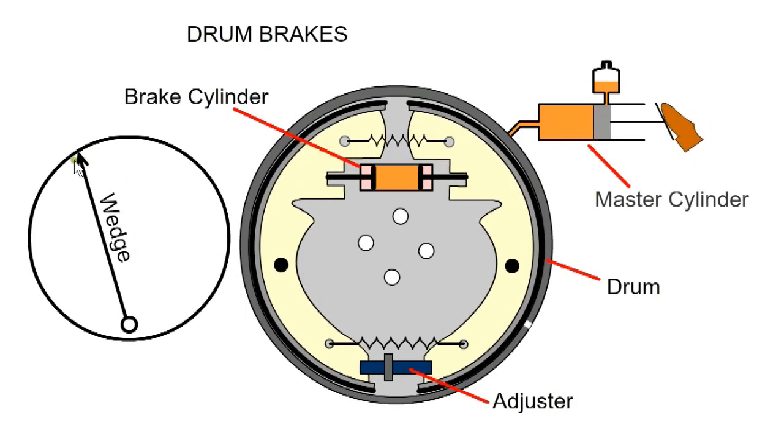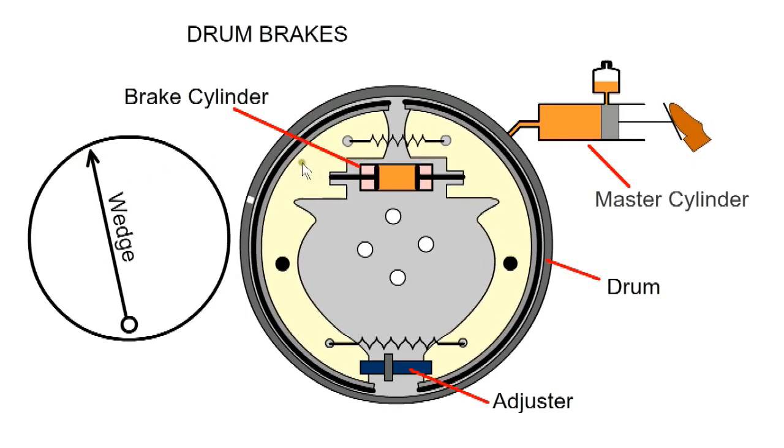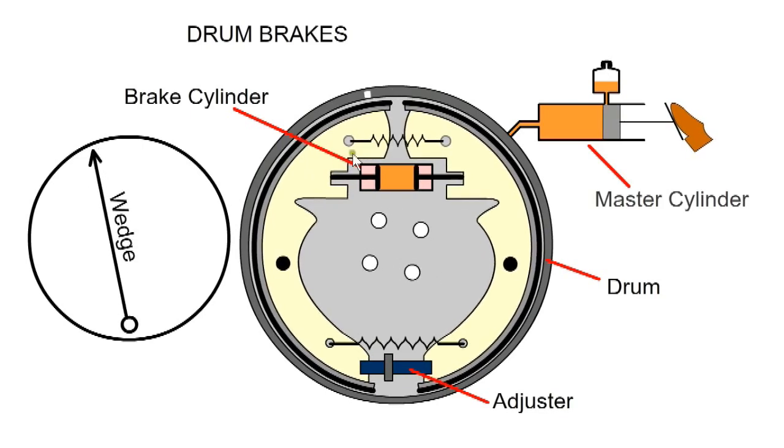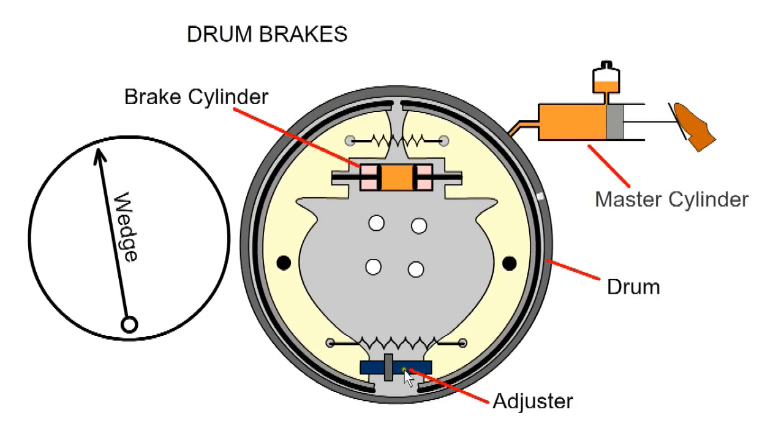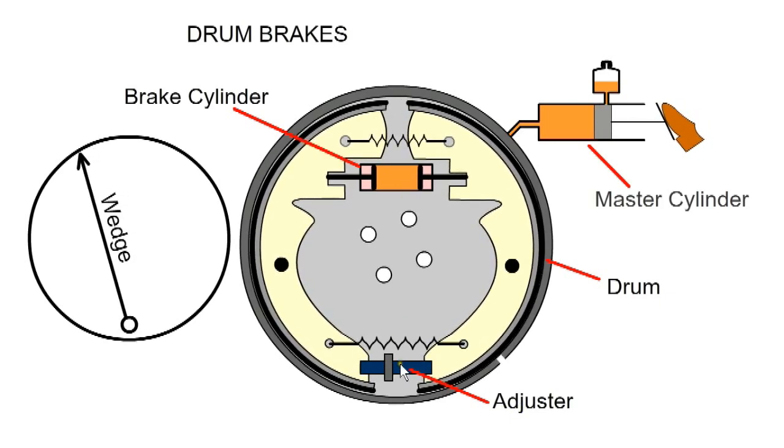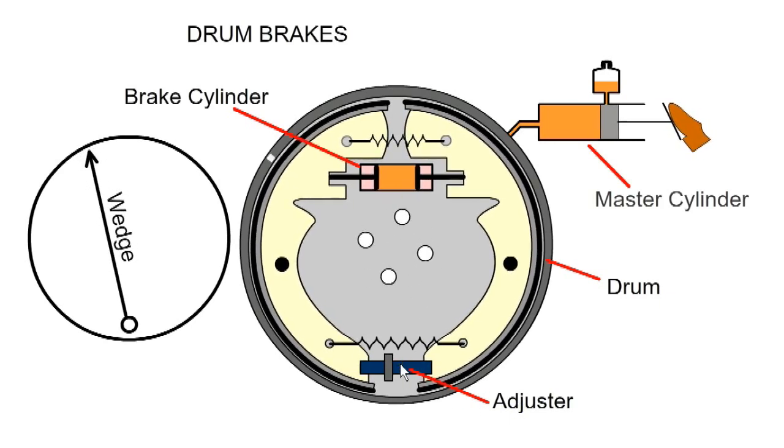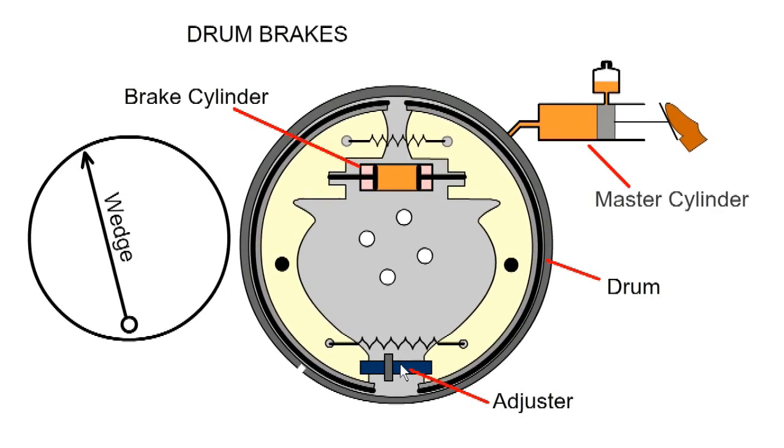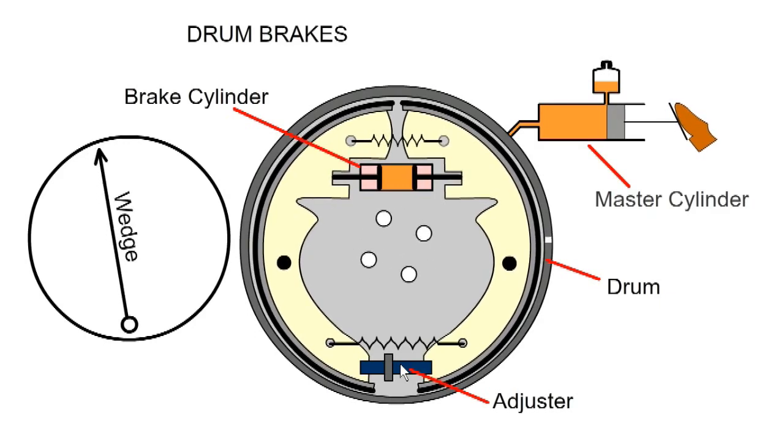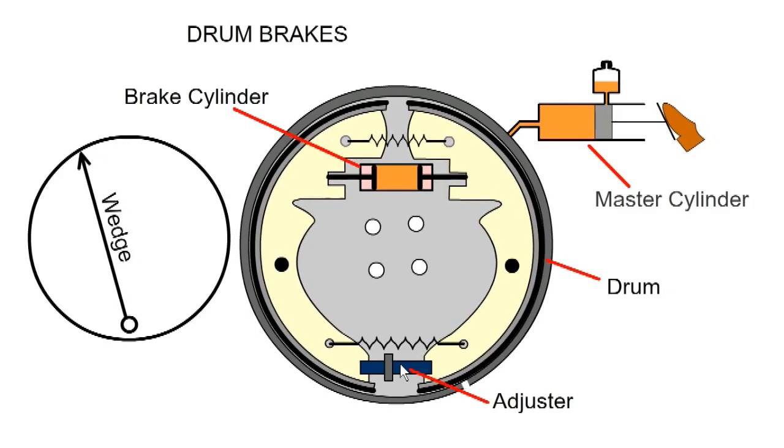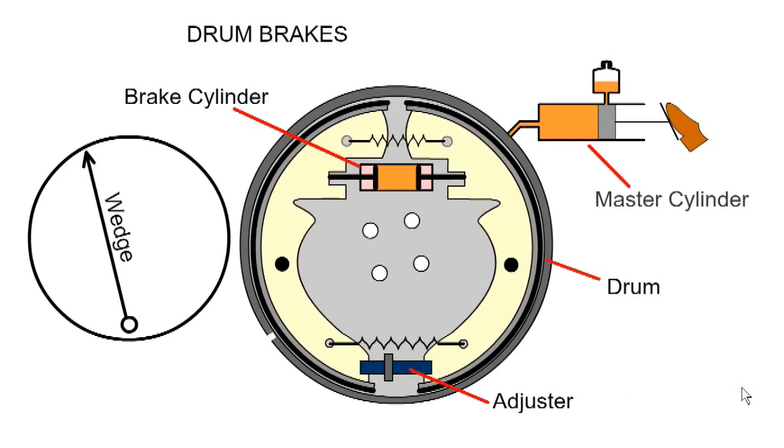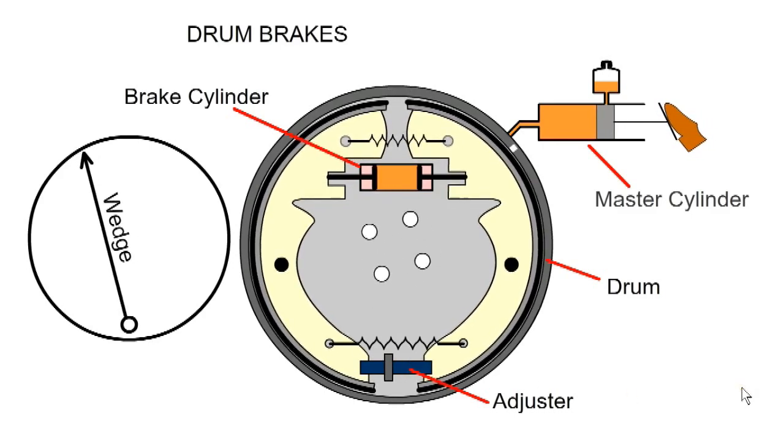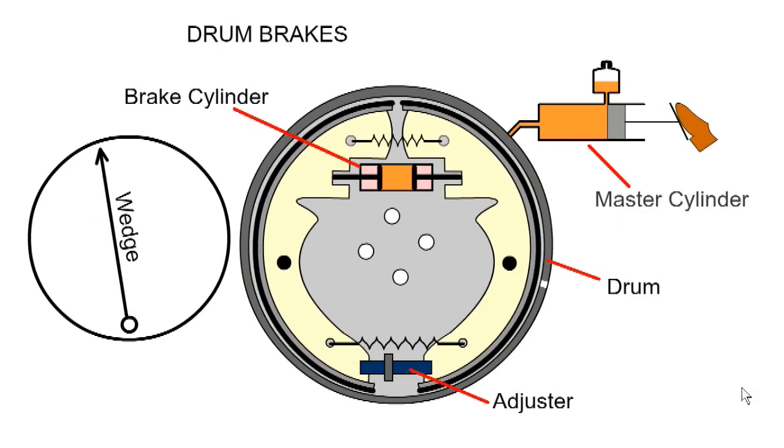When this brake shoe contacts the drum, there is a wedging action, which helps to increase braking force, but it also requires a spring to retract it. When the brake pads wear, the adjuster is used to alter the bottom anchor position. The hand brake or emergency brake is independent of the hydraulic system and usually cable operated. Drum brakes are more difficult to inspect, service, and cool. Under heavy braking, the brakes will heat and become less effective. This is called brake fade.